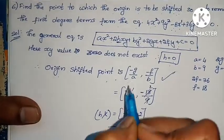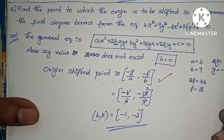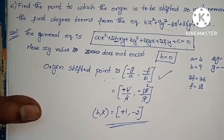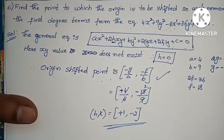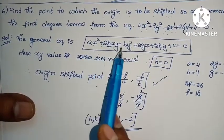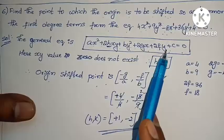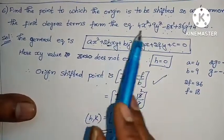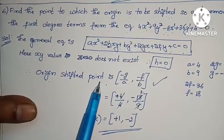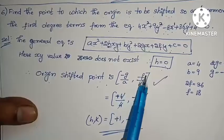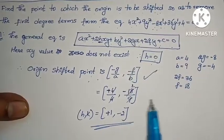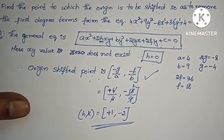So the origin shifted point is (1, minus 2). The formula to remove first degree terms: if xy term does not exist (h equals 0), then the origin shifted point is (minus g by a, minus f by b). Substitute the g and f values to get the answer. It is very simple.